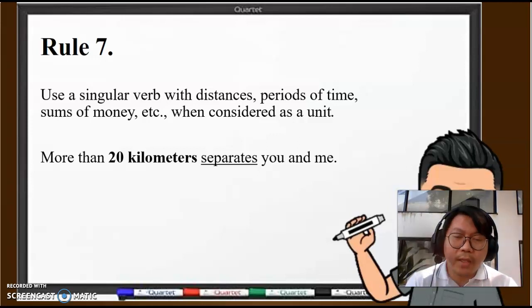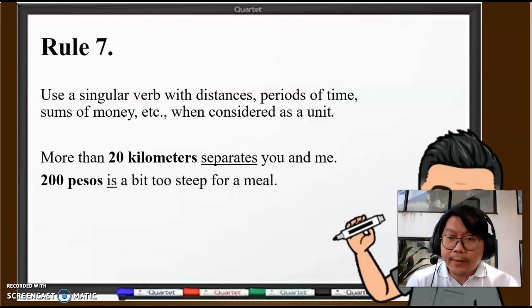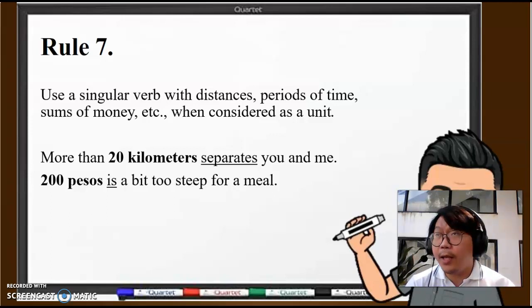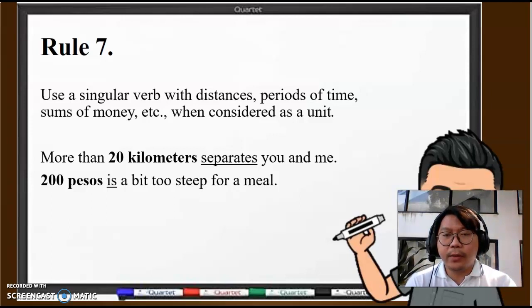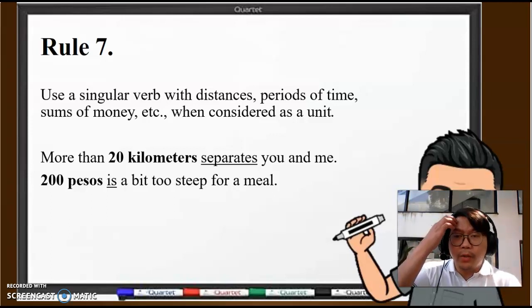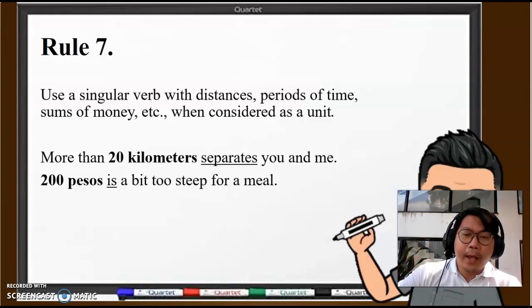Next: "200 pesos is a bit too steep for a meal." It's too expensive if 200 pesos for one meal. So this is a single unit. 200 pesos is the price of the meal, so that is one concept, a singular concept. So "200 pesos therefore is," even though the form of pesos is plural.